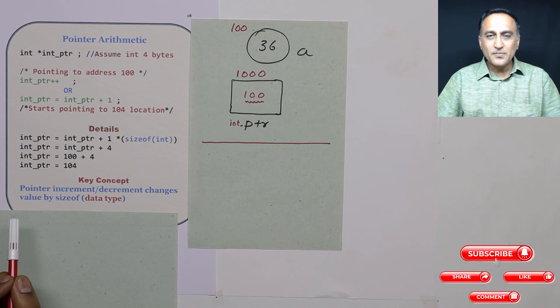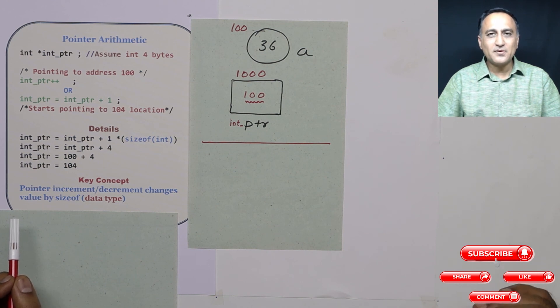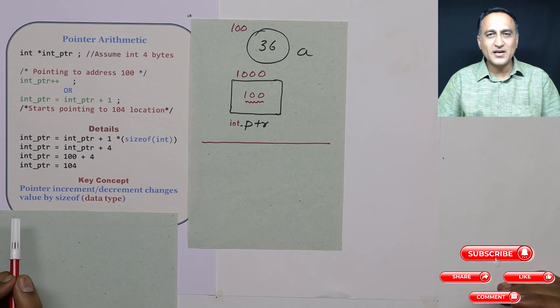So pointer arithmetic, we have addition and subtraction. Pointer multiplication and division doesn't make any sense.